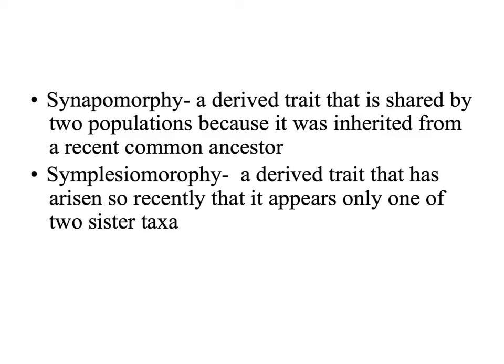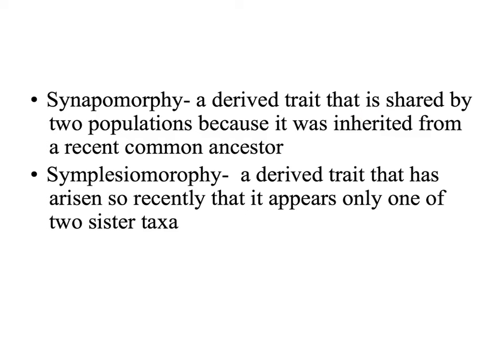A synapomorphy is a derived trait that is shared by two populations because it was inherited from a recent common ancestor. A symplesiomorphy is a derived trait that has arisen so recently that it appears in only one of two sister taxa.